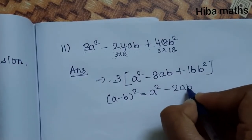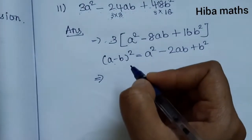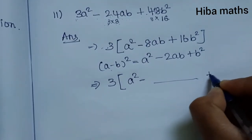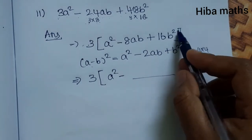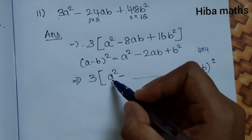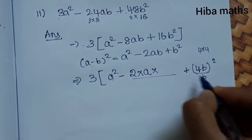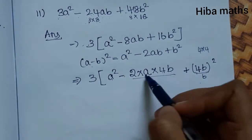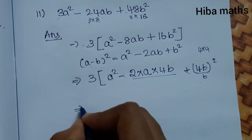Using (a-b)² = a² - 2ab + b², with a = a and b = 4b: we check that a² is present, minus 2×a×4b = 8ab is present, and (4b)² = 16b² is present. This is correct. So the factorized form inside is (a - 4b)².